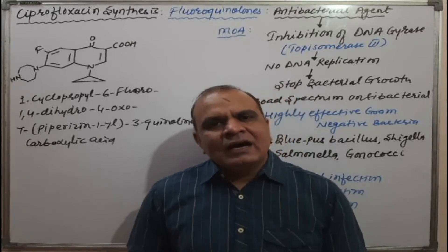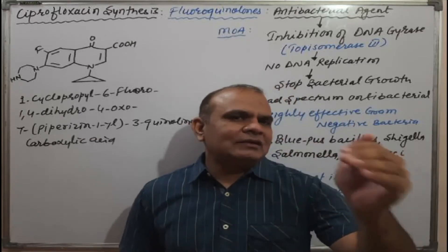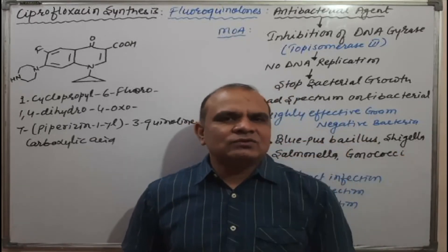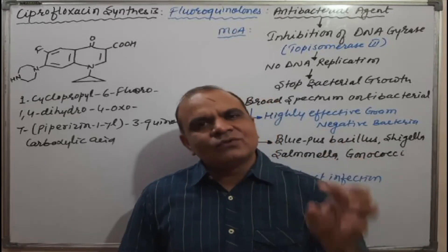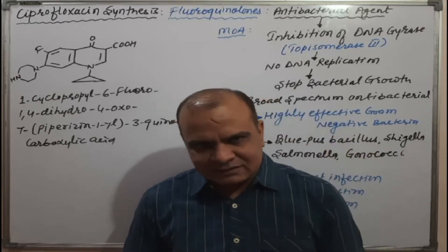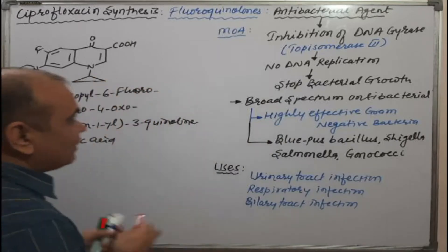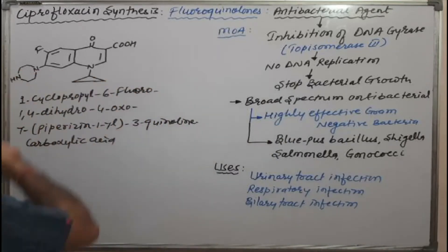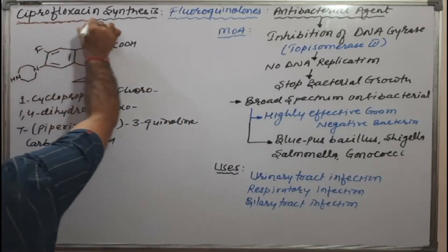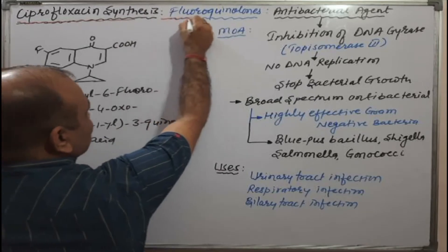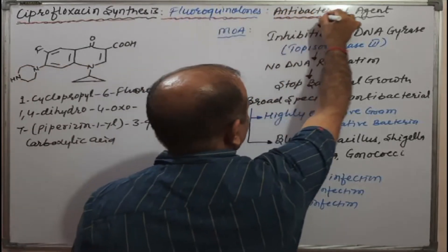Ciprofloxacin is basically a prototype drug — meaning it is a representative example for the fluoroquinolones class. So to summarize: ciprofloxacin belongs to the fluoroquinolones category and is an antibacterial agent.